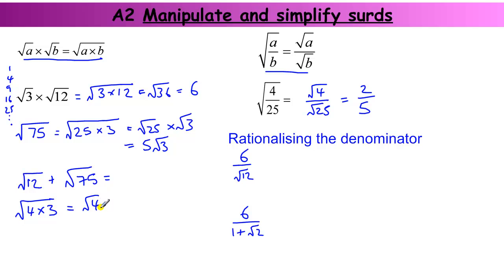Then I've got the square root of four times the square root of three. Square root of four is two. So that's two lots of root three. So the square root of twelve is two lots of root three. We already worked out the square root of seventy-five, it is five lots of root three.